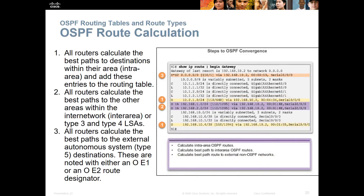Let's get into OSPF route calculation. All routers calculate the best path to the destination within their area — that's intra-area — and add these entries to the routing table. You may end up with duplicate paths to different areas. All routers then calculate the best path to other areas within the inter-network — inter-area, or Type 3 and Type 4 LSAs. All routers calculate the best path to the external autonomous system — Type 5 destinations — noted as O E1 and O E2 routes. The best paths depicted by the DR remain in the routing table; backup routes are not shown in the show IP route output.